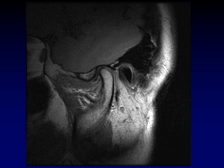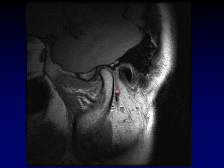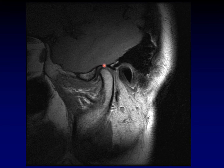On the sagittal oblique T1 weighted image, the condylar head, condylar neck, and ramus are visible in the center of the joint. The socket is called the glenoid fossa, and anterior to it is the articular eminence. Behind it is the external auditory canal, with the temporal lobe above. The interarticular disk appears as a dark object between the articular eminence and the condyle. Note how smooth and round the condylar head is, with the glenoid fossa serving as a smooth, rounded receptacle.